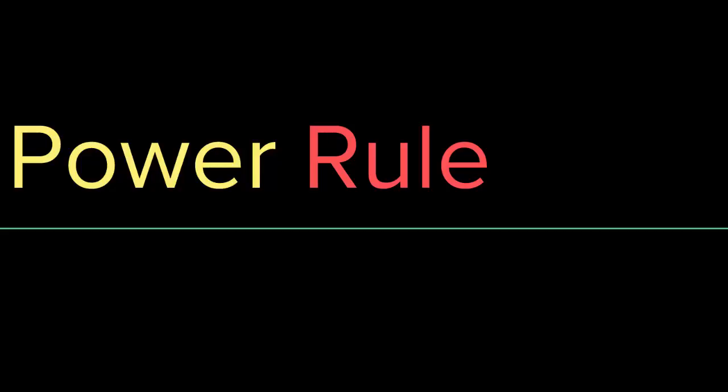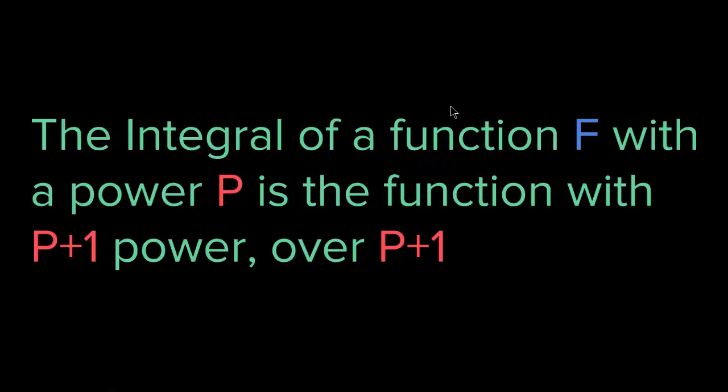In this second rule, we'll talk about the power rule. So far, we know that the integration of a constant becomes a constant times a variable. So if we are integrating 3 with respect to x, it becomes 3x. But what is the integral of something like 3x — a variable that is to a power of 1? The rule is simple: the integral of a function f with a power p is the function with p plus 1 power, over p plus 1.